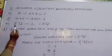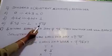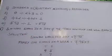Next, any number divided by the same number, we get the quotient 1. Next, any number divided by 1, we get the same number.